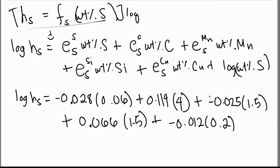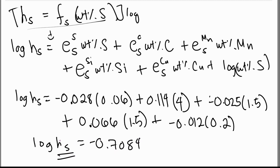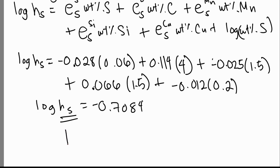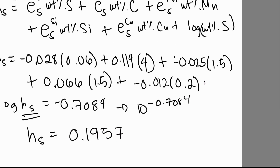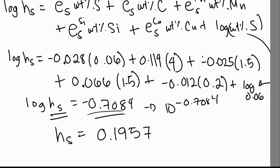Solving: log H_S = −0.7084 (including the log(0.06) term — don't forget to add log of wt% S). Since activity must be between 0 and 1, H_S = 10^(−0.7084) = 0.1957. So the activity of sulfur is 0.1957.